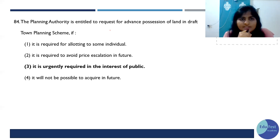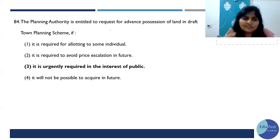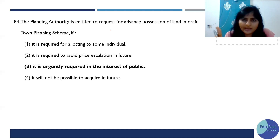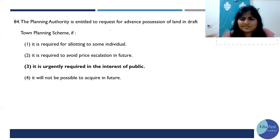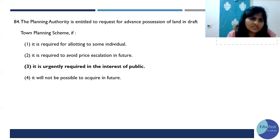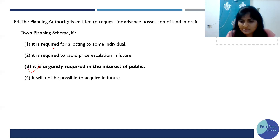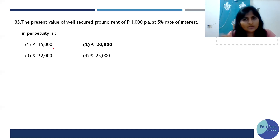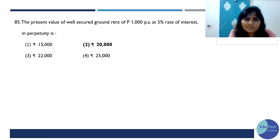The planning authority is entitled to request for advance possession. Advance possession — I think it is under section 83 or something similar. Advance possession is allowed when it is urgently required for the public interest. So if you look at the MRTP Act, you will see the advance possession provision — find the option with 'public interest' and mark that as the answer.